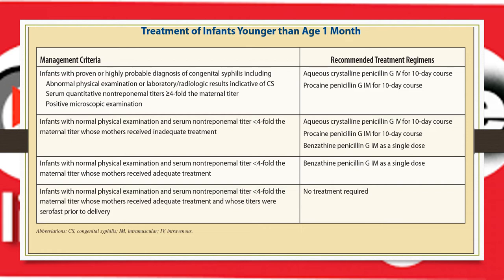For infants with normal physical examination and non-treponemal titer less than fourfold maternal titer whose mother received inadequate treatment: give procaine or crystalline penicillin for 10 days, or a single dose of benzathine penicillin. For infants with normal exam and adequate maternal treatment: a single dose of benzathine penicillin IM. If the mother was treated appropriately during pregnancy and the infant shows no signs of congenital syphilis, a single dose of benzathine penicillin IM is sufficient. No treatment is required if the mother received adequate treatment and titers were non-reactive prior to delivery.